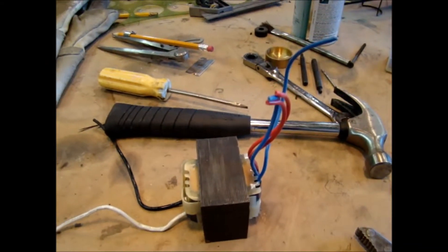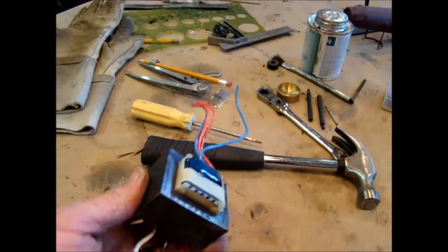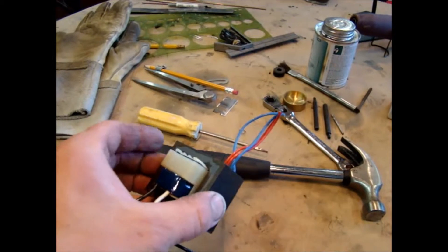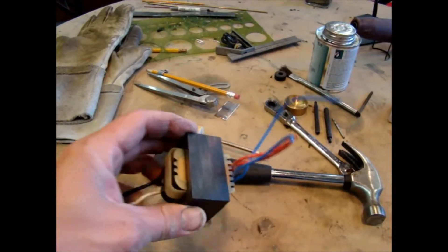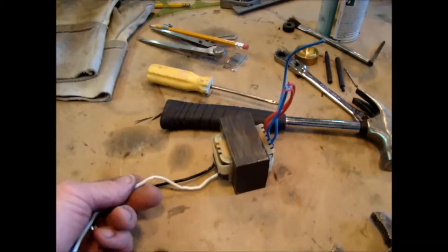This one I will show you how you can remove the mild steel core piece by piece to get at the copper wiring inside this transformer.